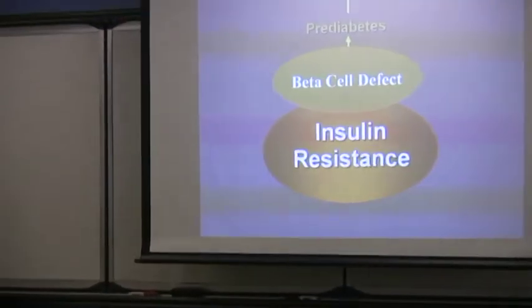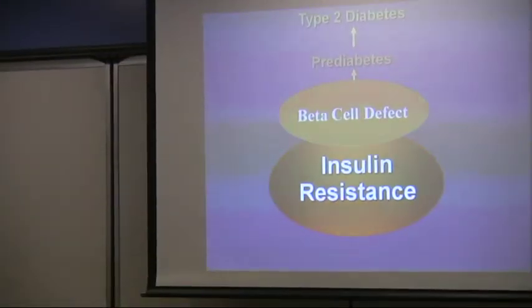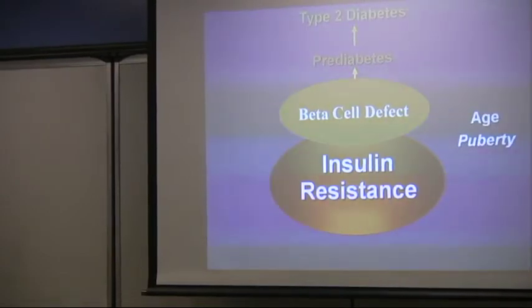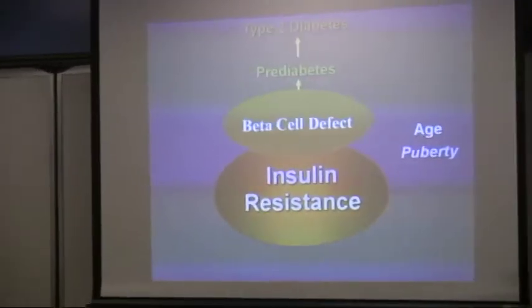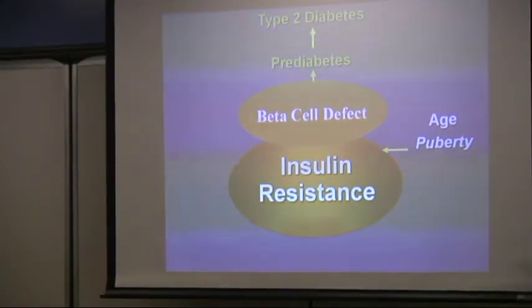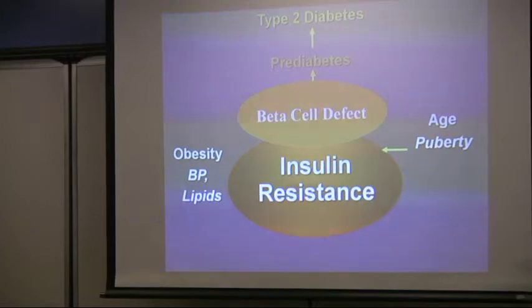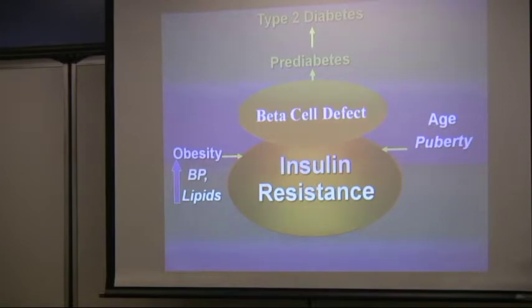This diagram shows the connection between the typical mechanism of insulin resistance leading to type 2 diabetes and the beta cell defect more typical of type 1. Risk factors for insulin resistance include age and puberty, obesity, elevated blood pressure, abnormal lipid profile, lack of physical activity, ethnicity, and genetics — since insulin resistance and type 2 diabetes run in families.